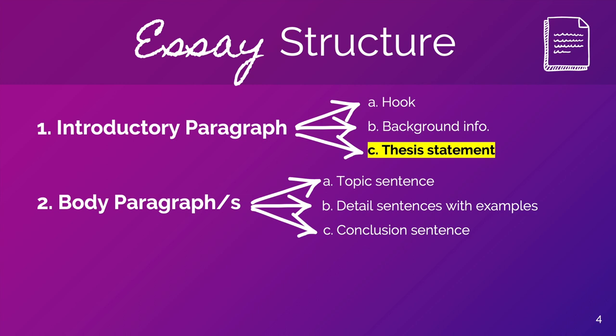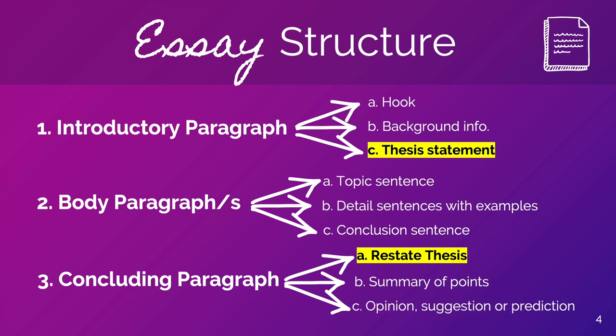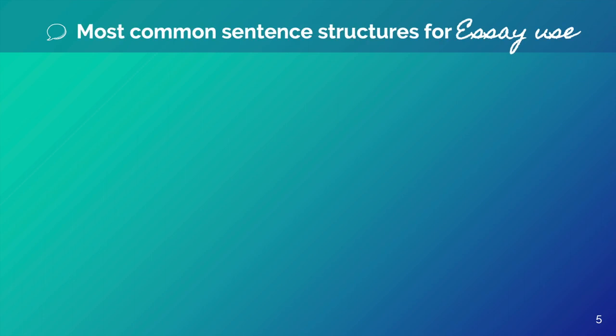The last paragraph of your essay — which can be the third or the fifth paragraph — is called the concluding paragraph. It is subdivided into three parts. The first paraphrases the thesis statement. Then we have the summary of the points you talked about in the body paragraphs. And the last point of your concluding paragraph is your opinion, your suggestion, or a prediction you make about the topic. Now that we have a clear picture of the structure of an essay, we are going to take a look at the most common sentences for essay use.